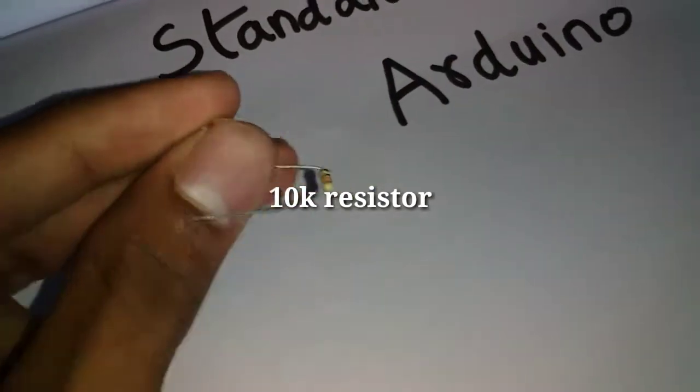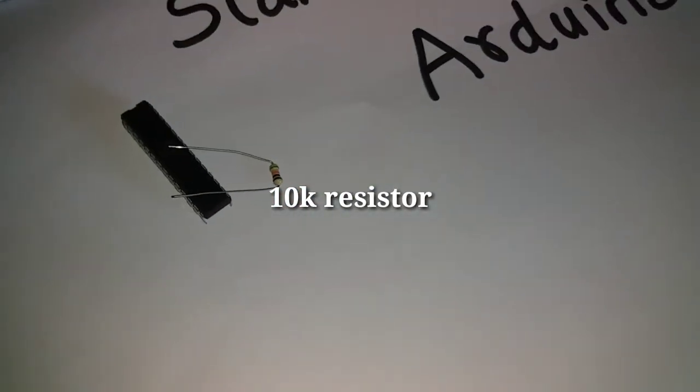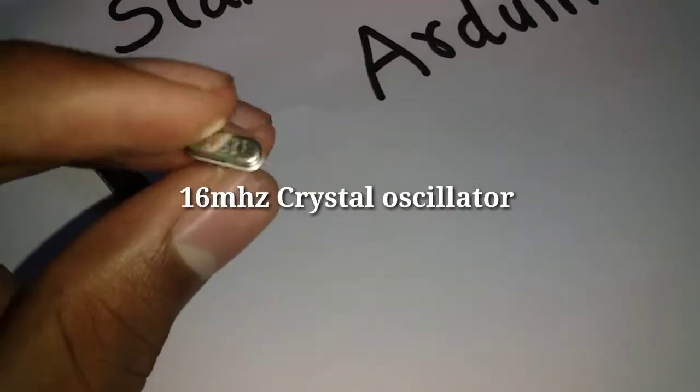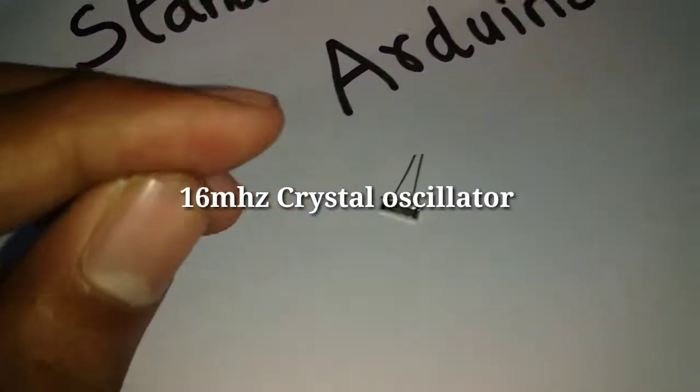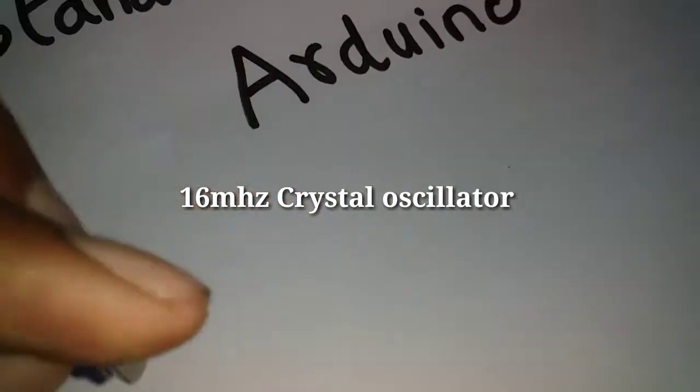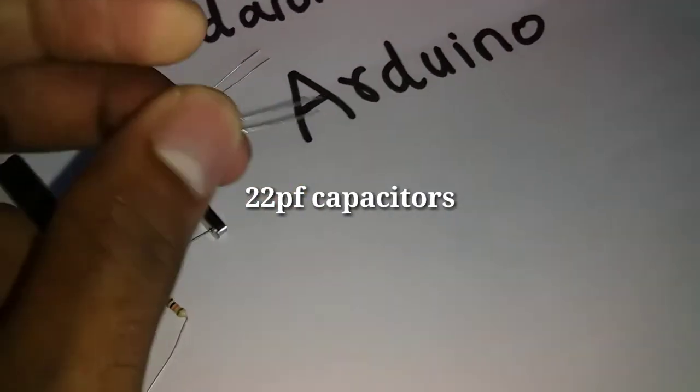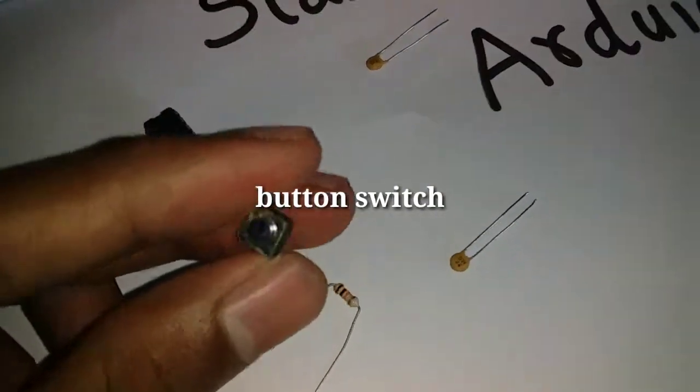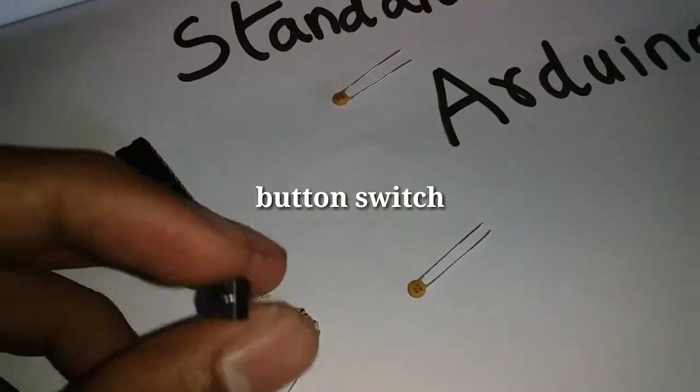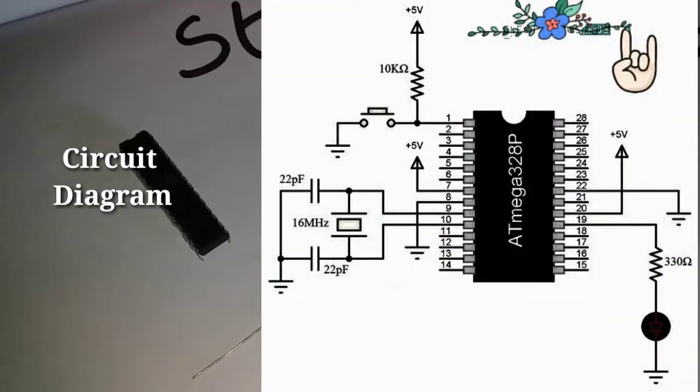This is a microcontroller. The 10K resistor. The crystal oscillator is 16 MHz. We have 22 picofarad capacitors. And a button switch. This circuit will be built.